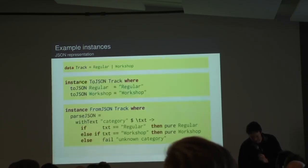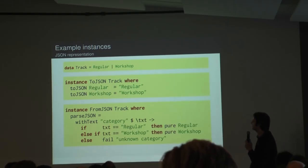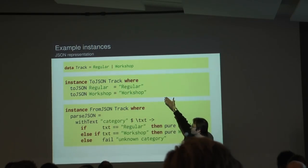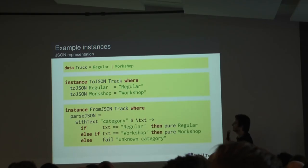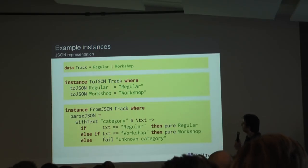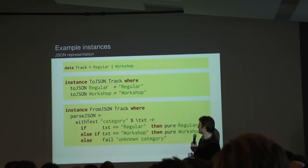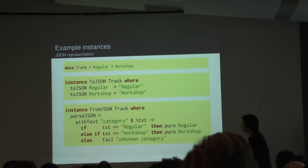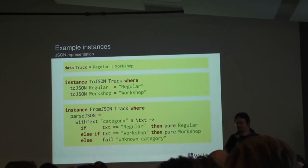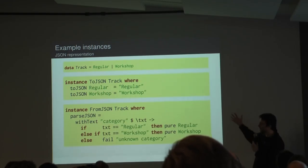To get a JSON representation, we start defining instances. For the Track type — which is either Regular or Workshop — we write a conversion saying if we have Regular, represent it as the JSON string "regular", otherwise as "workshop". For the parser, we expect the incoming JSON to be text, and it's hopefully either "regular" or "workshop", in which case we produce the correct Haskell constructor, otherwise we fail. But this is really writing the same correspondence twice in slightly different ways.